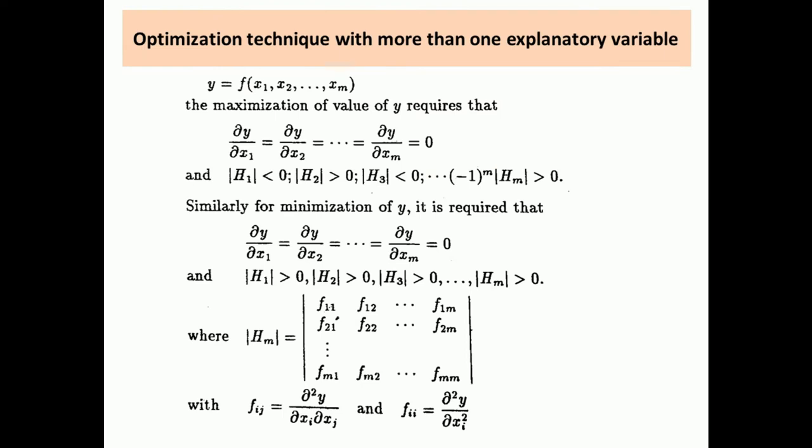Let us discuss the optimization technique with more than one explanatory variable. Let us assume y is a function of m numbers of explanatory variables x1, x2, up to xm. Then the first order or necessary condition requires partial differentiation of y with respect to x1 equal to 0, partial differentiation of y with respect to x2 equal to 0, and partial differentiation of y with respect to xm equal to 0.